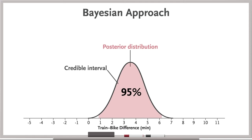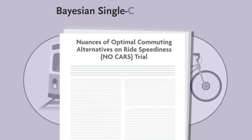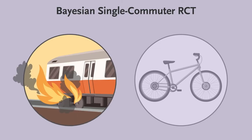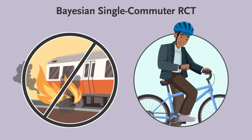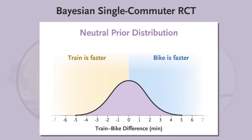This is tough stuff, so let's work through your example. You decide to conduct a Bayesian single-commuter RCT. You've heard that the electrical fires on the train issue has been fixed, and based on your past rides, you think that cycling takes about as long as a train ride with no slowdowns, so you use a neutral prior.